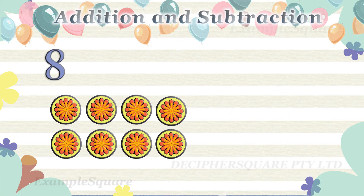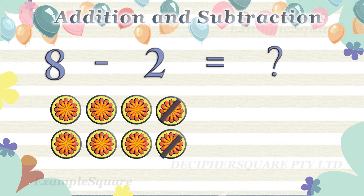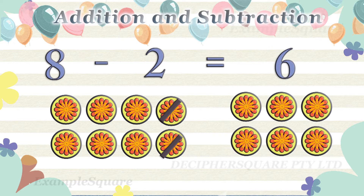There are eight stickers. How many stickers are left if two stickers are taken away from eight stickers? Two stickers are taken away from eight stickers, then six stickers are left. Eight minus two equals six.